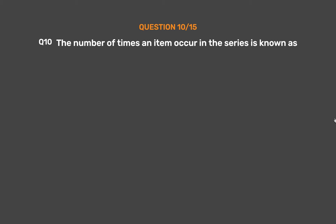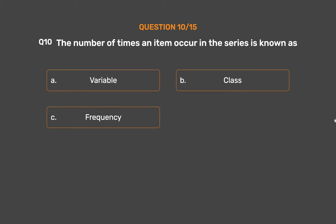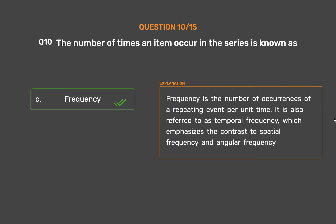Question number 10. The number of times an item occurs in the series is known as: Option A: Variable. Option B: Class. Option C: Frequency. Option D: Series. The correct answer is Option C: Frequency. Frequency is the number of occurrences of a repeating event per unit time. It is also referred to as temporal frequency, which emphasizes the contrast to spatial frequency and angular frequency.